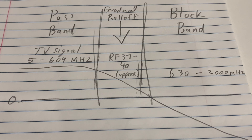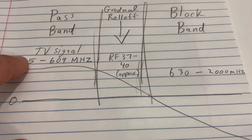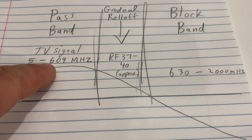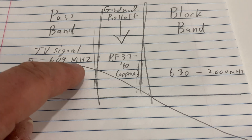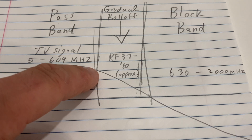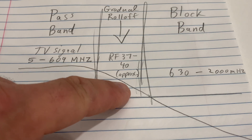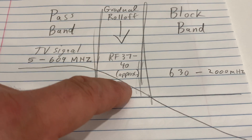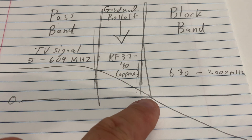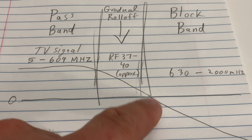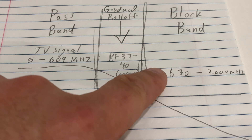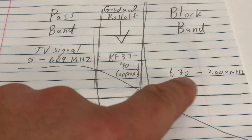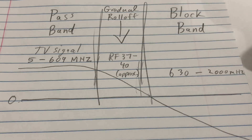Here's a diagram to explain the frequency roll-off. The passband — your TV signal from 5 to 609 megahertz — passes through from your antenna to your television or digital converter box. Just after 609 megahertz there's a gradual roll-off or attenuation covering RF channels 37 to 40. Then you hit the zero mark where these frequencies are pretty much completely attenuated, and that's your block band — the part the filter completely eliminates, from 630 up to 2000 megahertz — covering 4G, 5G, and LTE cell phone signals causing all that interference.